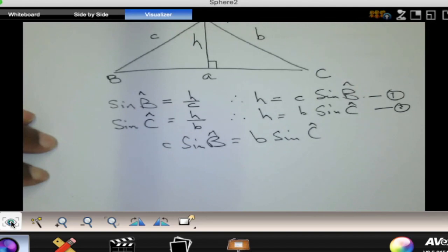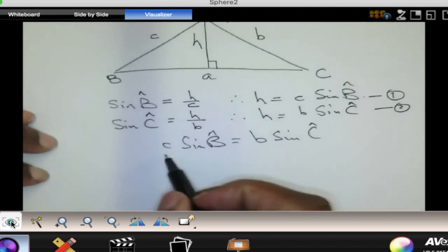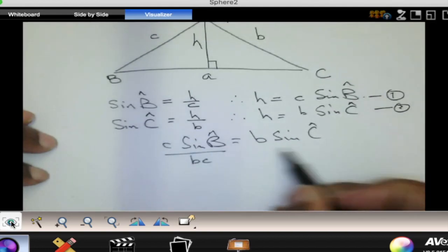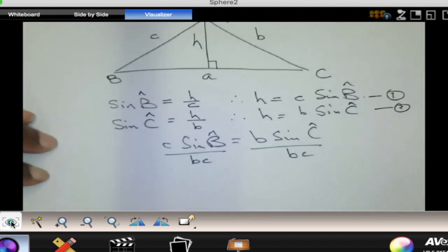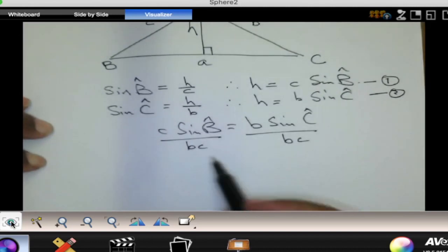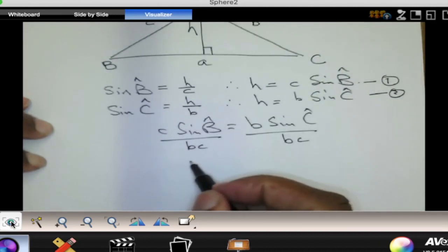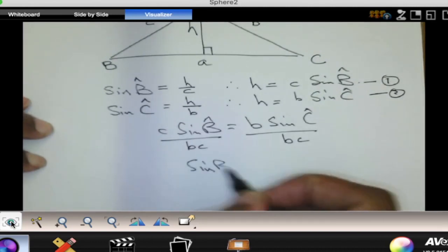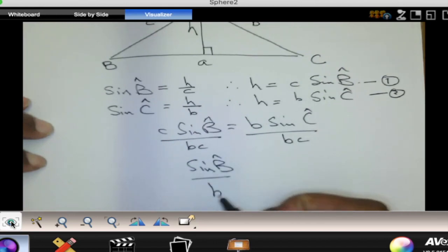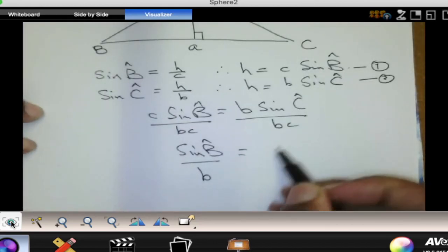If I divide both sides by bc, divide here by bc and divide there also by bc, then the left hand side becomes sine of angle B all over b.